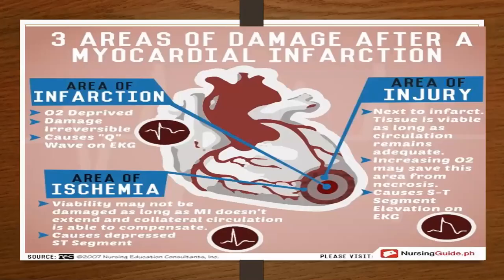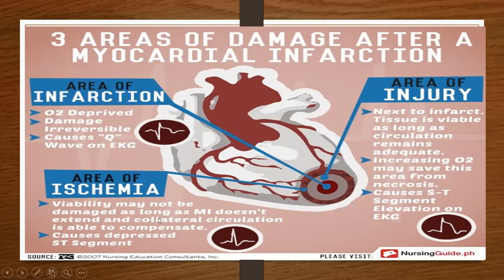There are three areas of damage from a myocardial infarction. First, you have the area of ischemia — when the ischemia starts, the viability may not be damaged as long as the MI doesn't extend and collateral circulation is able to compensate. On the EKG you'll see ST depression. Then that tissue goes on to become injured — next to the infarction, the tissue is viable as long as circulation remains adequate; increasing oxygen may save this area from necrosis, and it causes ST segment elevation on the EKG.